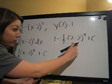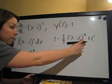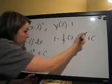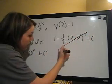So 2 minus 2 is 0, 0⁴ is 0, so this whole thing cancels, and we have 1 equals C.